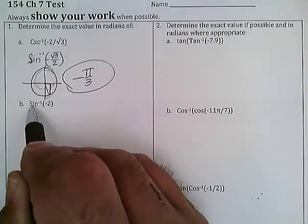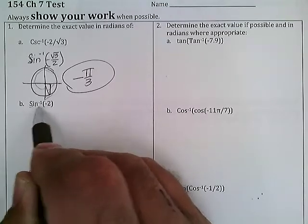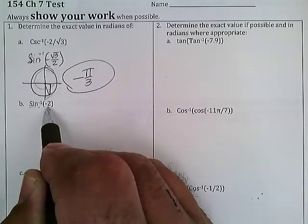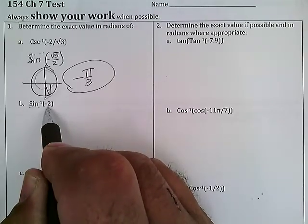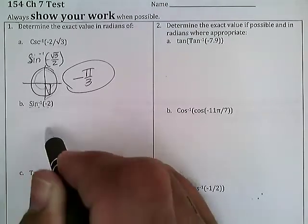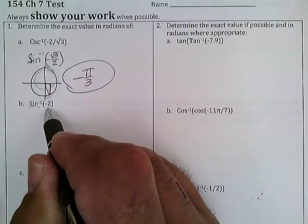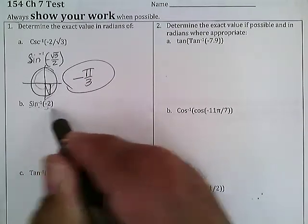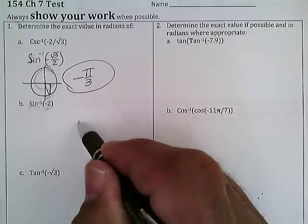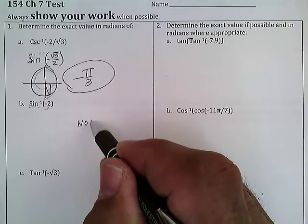What is the angle that has a sine of minus 2? Well, the sine is always somewhere between 1 and minus 1, never up to minus 2, so this one's not possible.